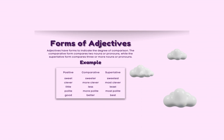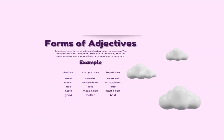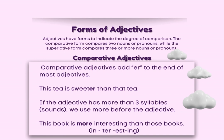There are also different forms of adjectives. The base form is called a positive adjective. The higher degree of comparing two objects is called a comparative adjective, and the highest degree when comparing three or more objects is called superlative. Comparative adjectives add '-er' to the end of most adjectives: 'This tea is sweeter than that tea.' If the adjective has more than three syllables, we use 'more' before the adjective: 'This book is more interesting than those books.' Notice that 'interesting' has four sounds: in-ter-est-ing.